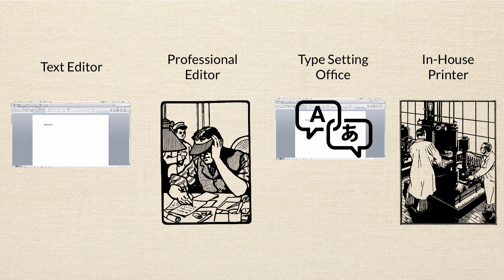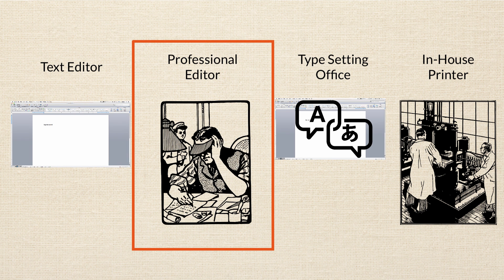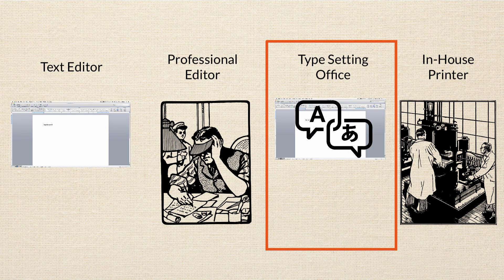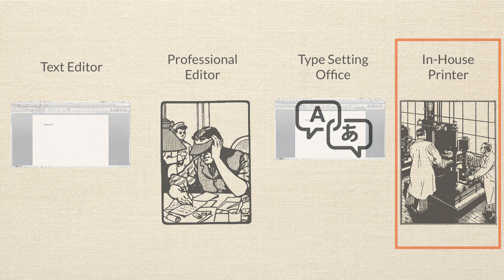So let's review this author's toolchain: the author uses a text editor program to write the manuscript, then sends it to a professional editor at a publishing company. That editor does some rearranging, checks for errors, and then sends it next door where it gets converted into a new file format that can actually be printed as a book. Then they send it off to the printer, the printer prints it, and voila — somebody buys your book from Amazon and reads all about zombies over a warm cup of latte.